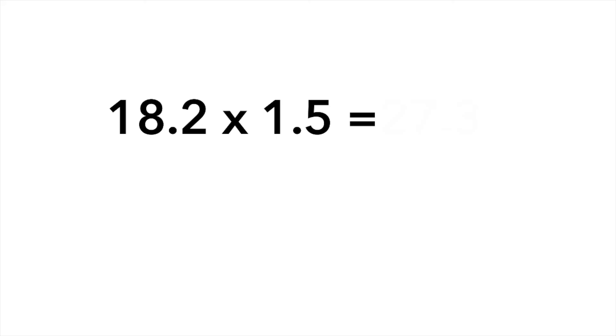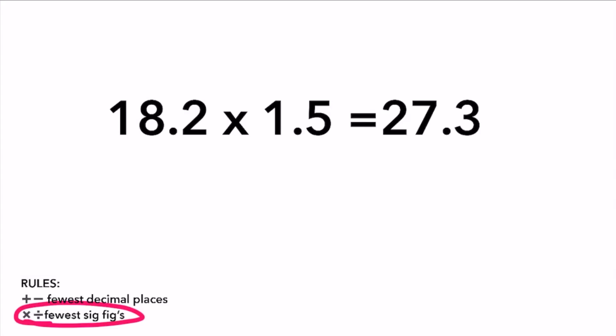18.2 times 1.5. The unrounded answer is 27.3. Since we're multiplying, we round our answer to the same number of significant figures as the least precise term. 18.2 has three significant figures and 1.5 has 2 significant figures. So we round our answer to 2 significant figures. The 3 means that our 7 stays the same, so our final answer is 27.